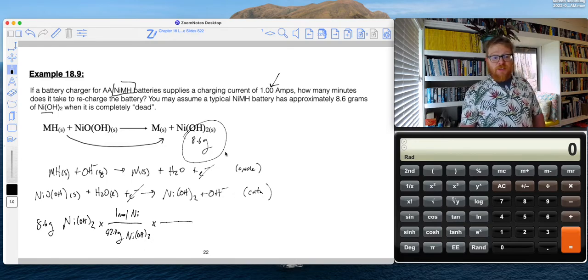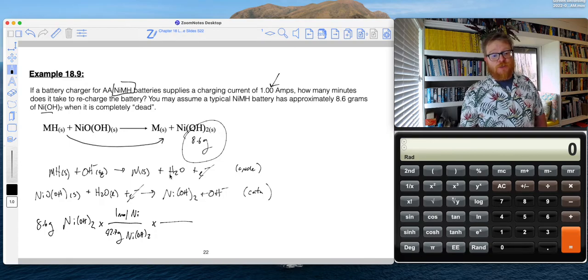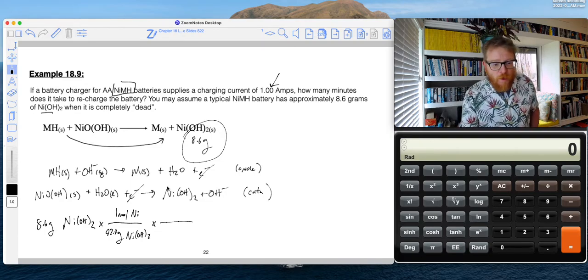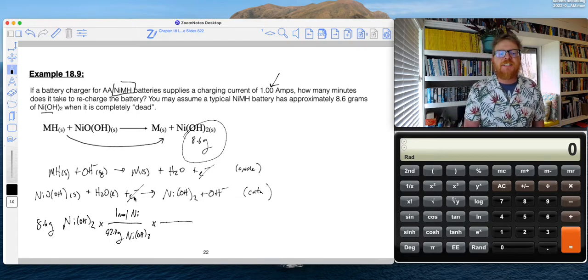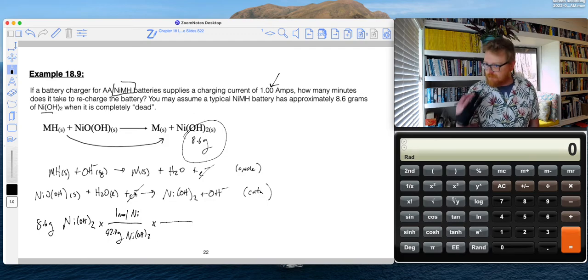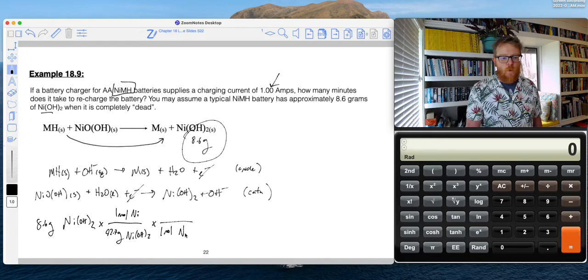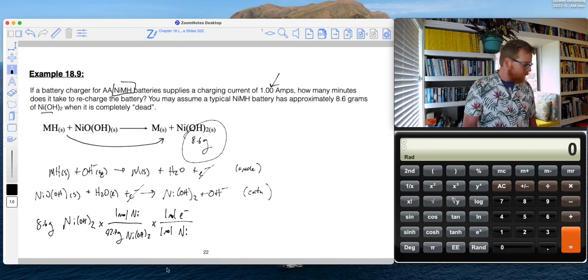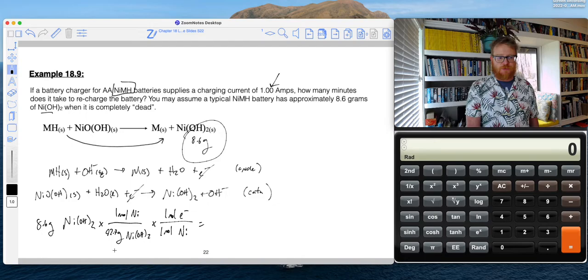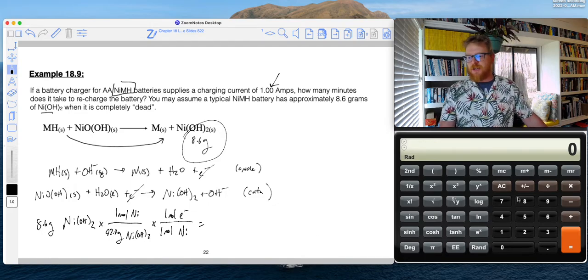And the important thing to note here is it's a one electron process. So when one mole of nickel hydroxide is formed, it had to consume one mole of electrons. So then all we have to do is use that stoichiometry and say one mole of nickel required one mole of electrons, and that's going to give me my total mole of electrons that I have to transfer. So let's just do that calculation.